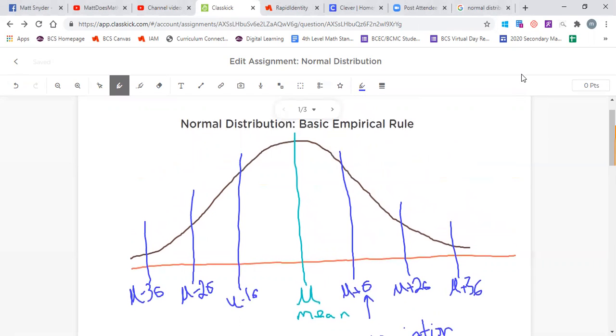The reason why this is so important is as the data is distributed normally or mound-shaped and symmetrical, we see the phenomena that we have some really good estimates for data. And those estimates of data are as follows.